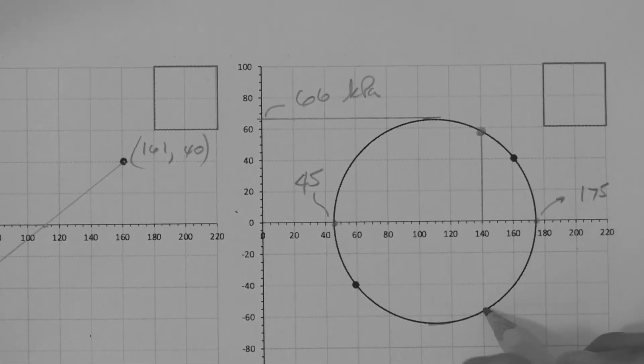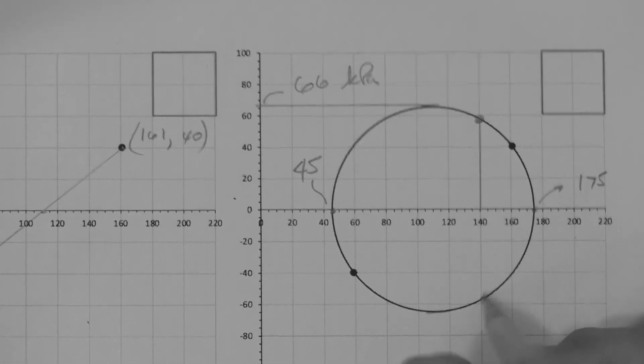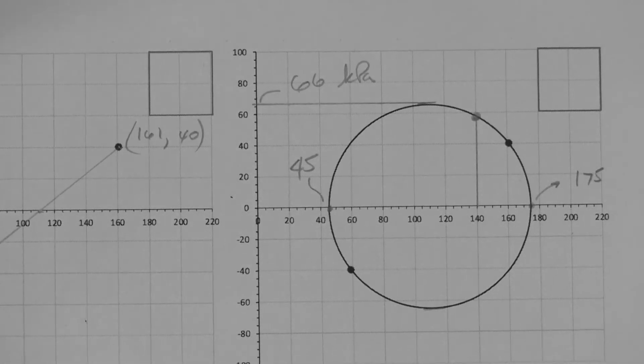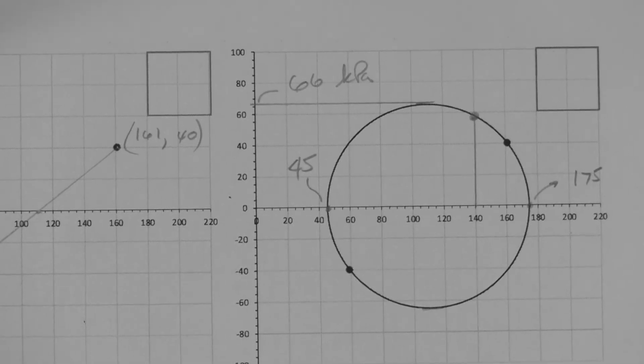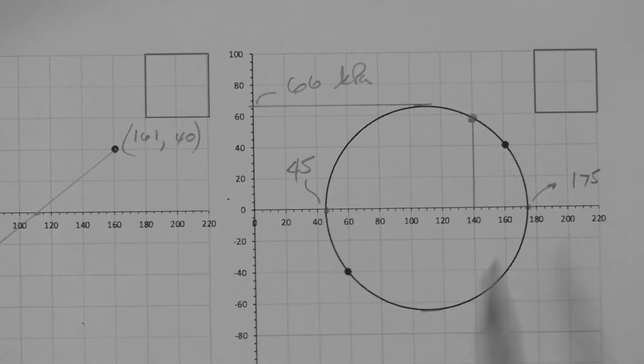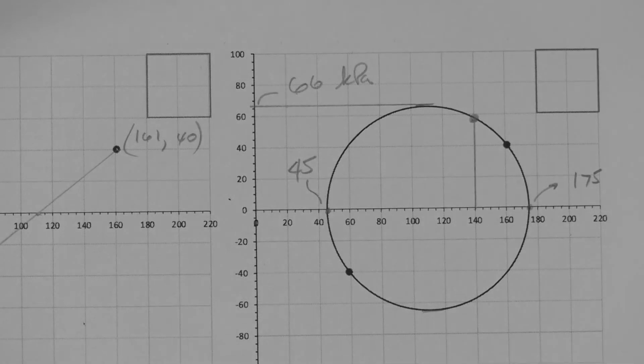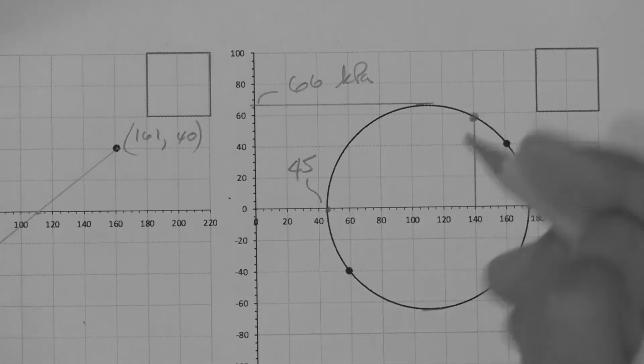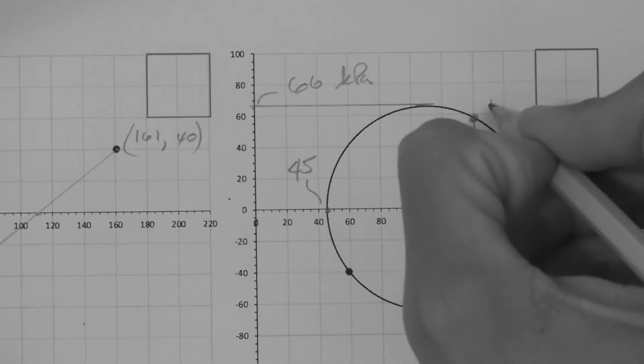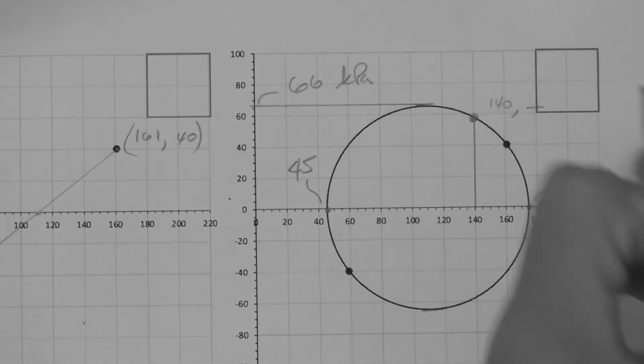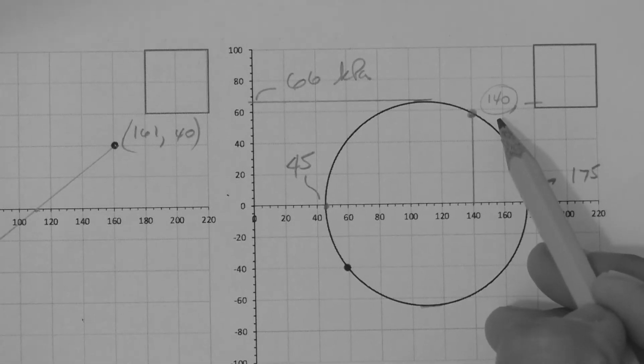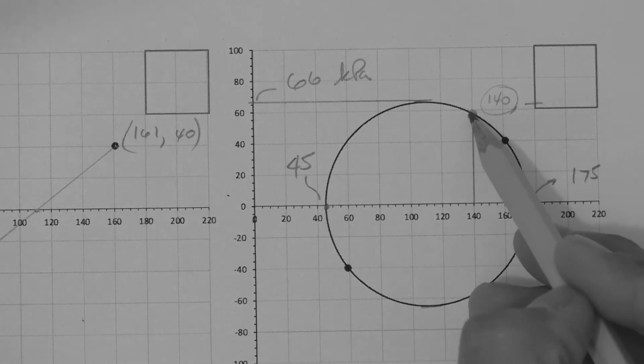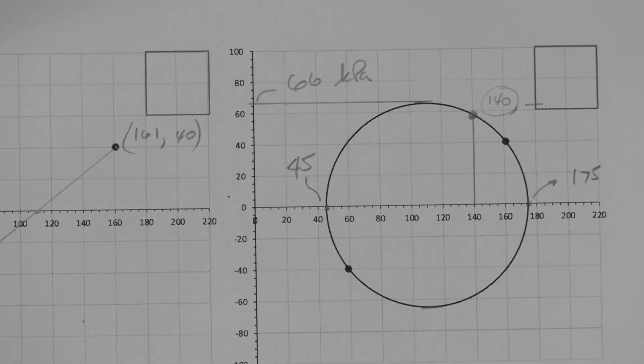So it's that point right there. It could also be this point down here. So we can choose one or the other. Let's just choose the positive one, meaning the positive tau one, just because we want to. There's no need to justify it. We just pick one of them. Remember, the question is, on what plane is this effective stress acting? This 140, some value here, but on what plane is this 140 acting? That's given to us by this point. So how do we find that out?